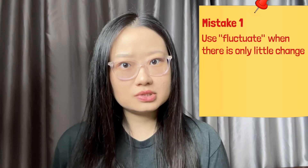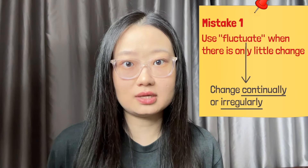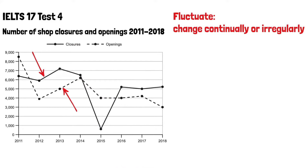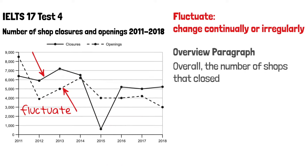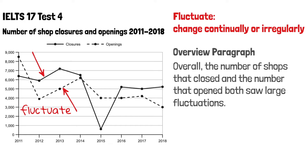First of all, let's talk about the verb 'fluctuate.' Many people use it when there is only little change. This is incorrect because to fluctuate means to change continually or irregularly. For example, for these two lines, we can use fluctuate and say that overall, the number of shops that closed and the number that opened both saw large fluctuations, because the numbers changed continually and irregularly.